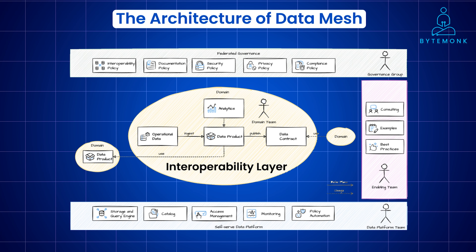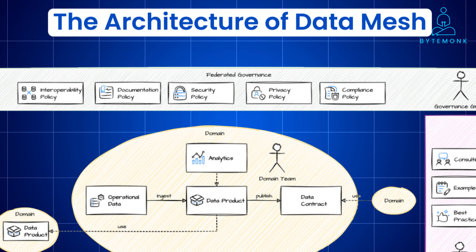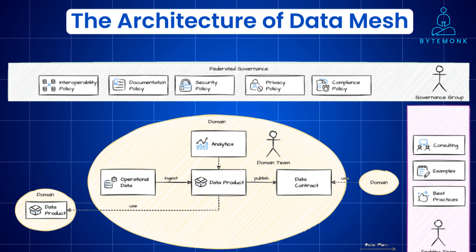While data domains are decentralized, they still need to work together seamlessly. The interoperability layer ensures consistent data formats, communication protocols, and security across the entire data mesh. A federated governance approach establishes high-level guidelines for data security, privacy, and quality, ensuring responsible data management without stifling domain-level innovation.